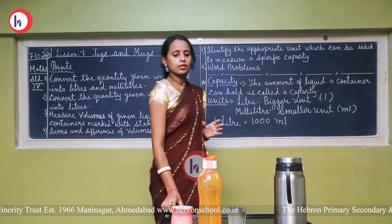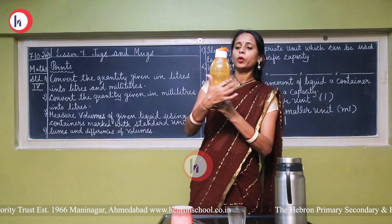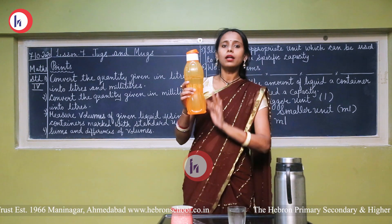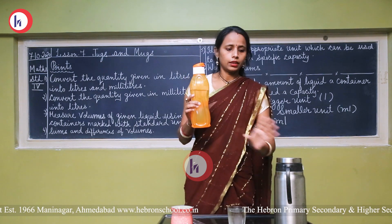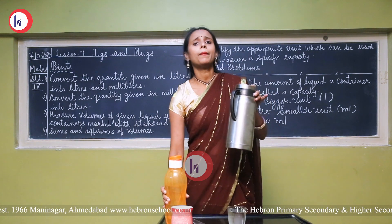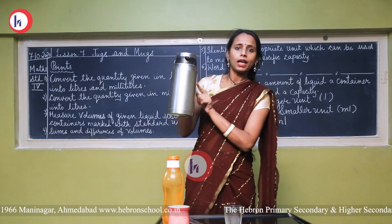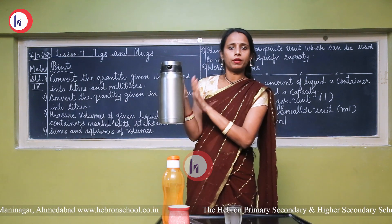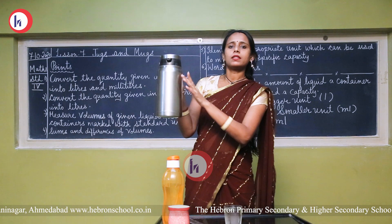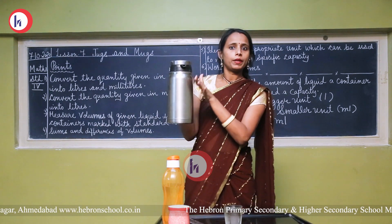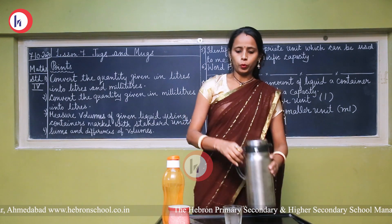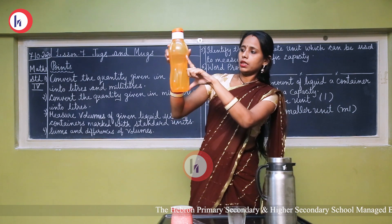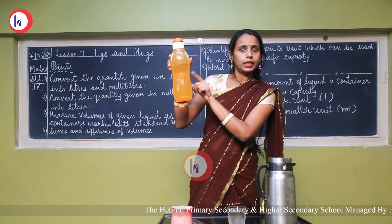One more word to understand here — that is 'volume.' Volume means the space occupied by water or any liquid in a container. For example, how much water a jug can hold — the space filled with water inside it is called volume. If water is here in this glass, the space occupied by the water is the volume of water in the glass.